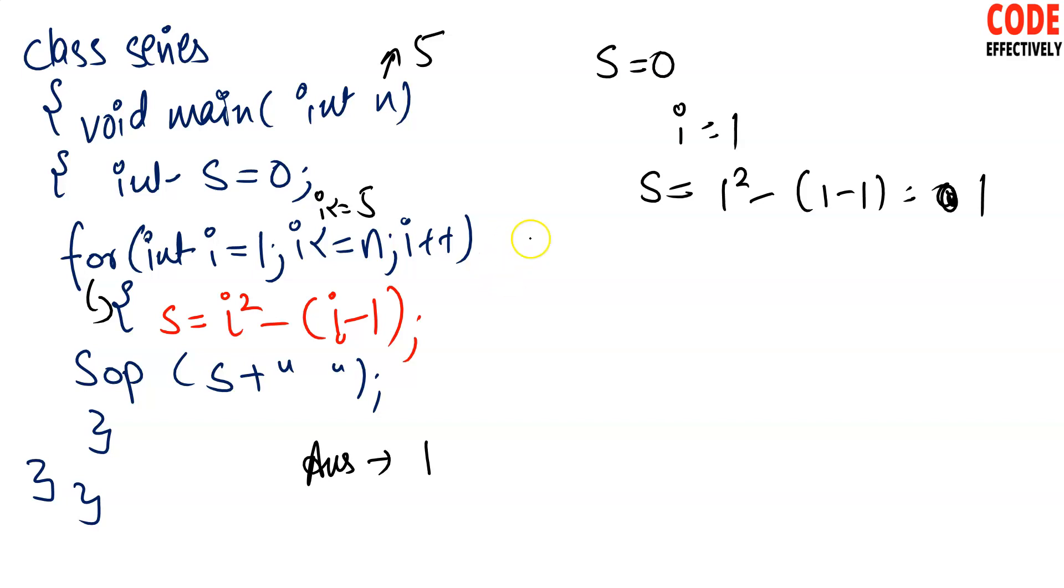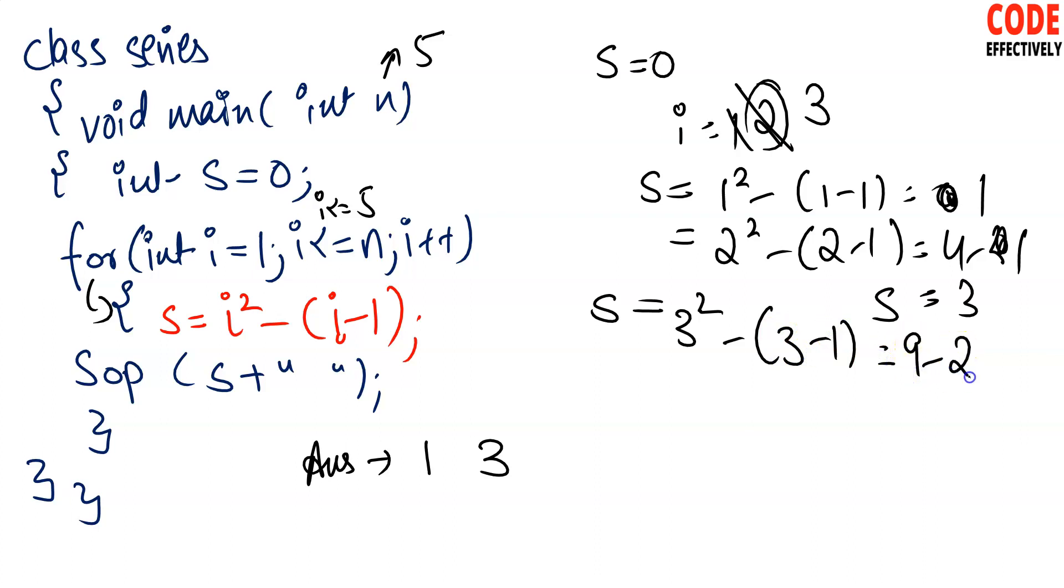Our next i value will be now 2. So it will be what? s is equal to i square minus i minus 1. i square means i value 2, so 2 square minus 2 minus 1, so it will be what? 4 minus 1, it is what? 3. So we got 3 in our third term. s is equal to 3, so what print will be 1 after 3. Now i value will be 3. So what will s is equal to i square? i square means i value 3, so 3 square minus i, i means 3 minus 1, so it will be what? 9 minus 2, so it is what? 7. So s is what? 7, so 7 print will be. i value of 4, so s is what? Now 4 square minus 4 minus 1, so it is what? 16 minus 3, it is what? 13. So 13 will be 13.